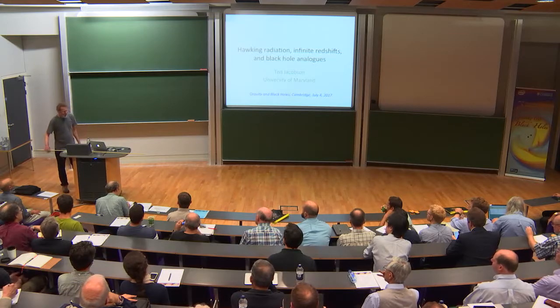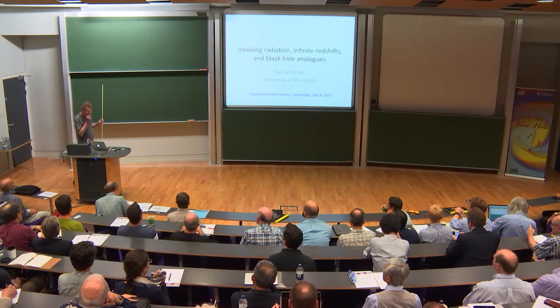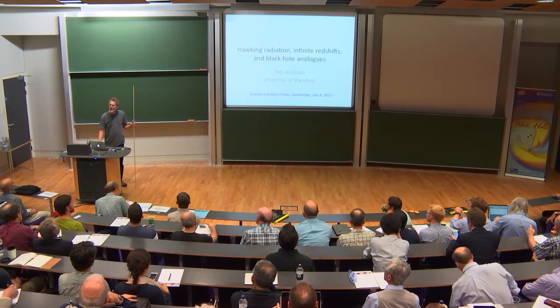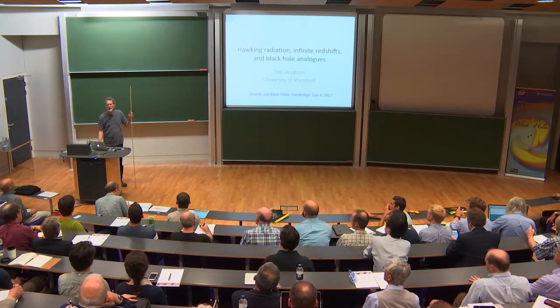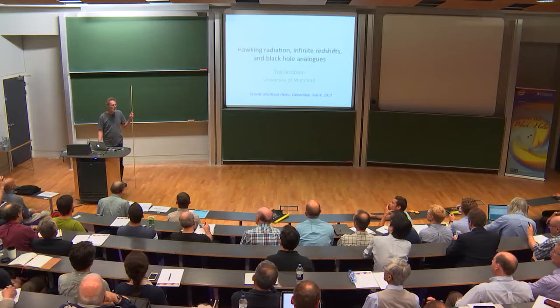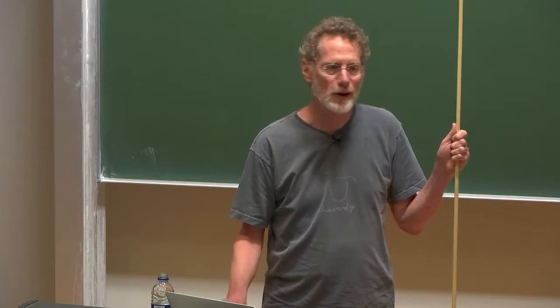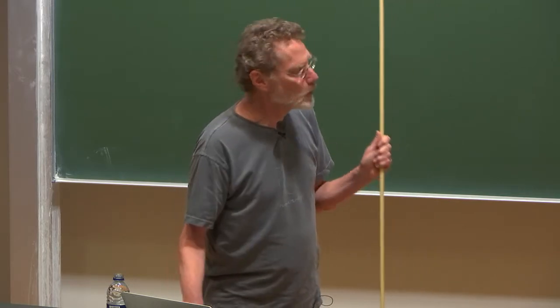My talk will be about this analog Hawking radiation, basically, but I want to start by assuming that there are people in the room who really barely know what Hawking radiation is and what it comes from, or why anybody would want to consider an analogy of it in condensed matter. So I just want to go back to a peculiar aspect of the history of the discovery of Hawking radiation.